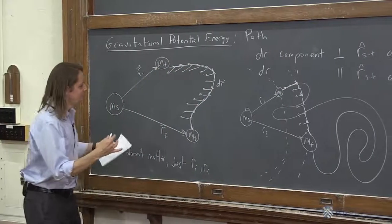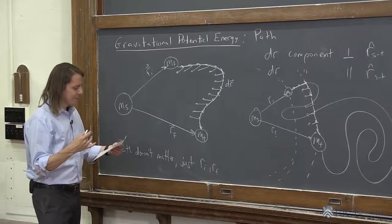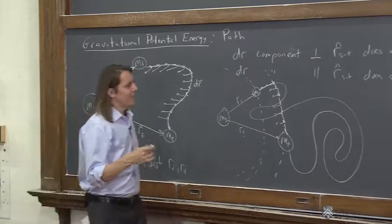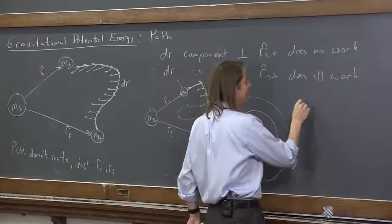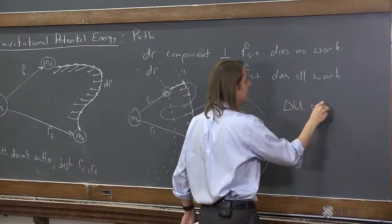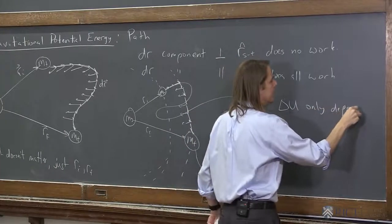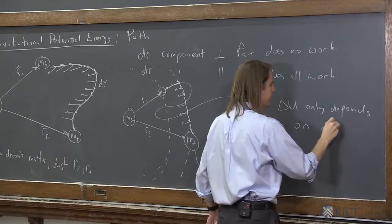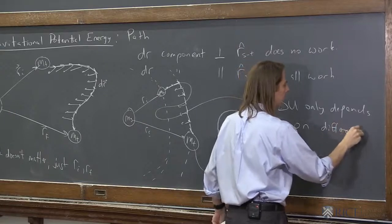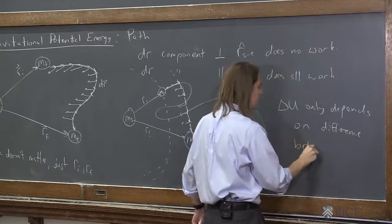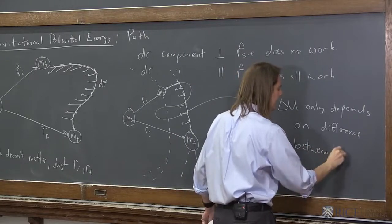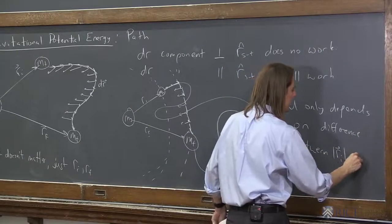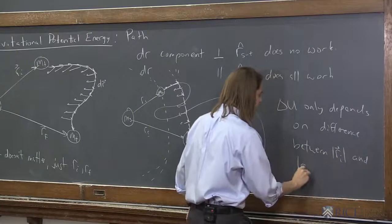So what this tells us is that all that really matters is delta r. Delta u only depends on the difference between the magnitude of ri and the magnitude of rf.